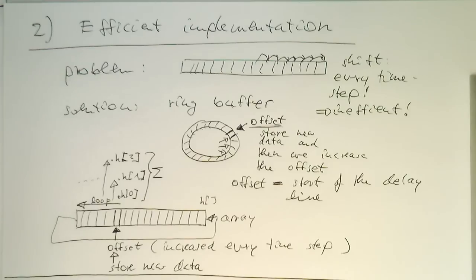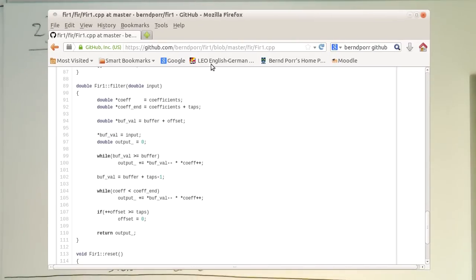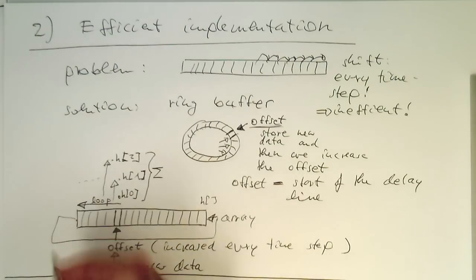Let's have a look in the code how this works. So we have here, this is our starting point of our buffer here. So this is buffer plus offset. So the buffer variable is our starting point here. And offset defines our offset here.